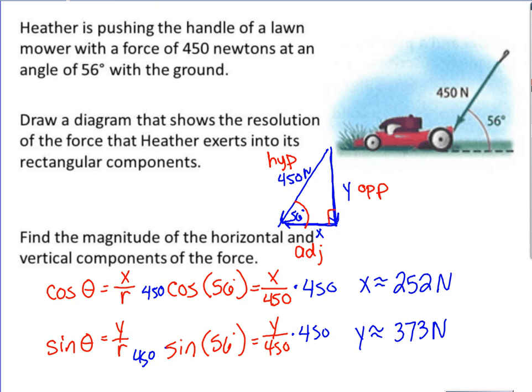So our diagram is drawn. It says find the magnitude of the horizontal and vertical components of the force. Our horizontal has 252 newtons, which is the magnitude. Our vertical, how much is it pushing down, is 373 newtons.